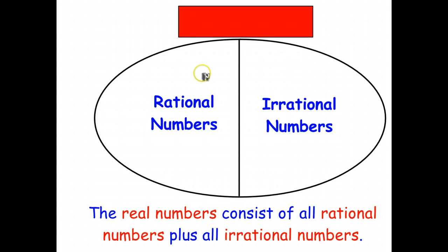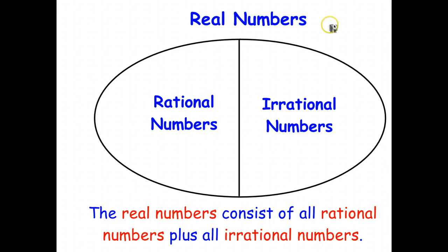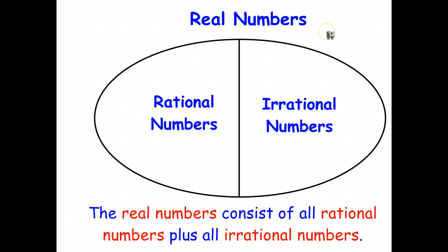Now if you take all of the rational numbers such as one half and three quarters, and all the irrational numbers such as the square root of 2 and pi, you end up with a set of numbers that we call the real numbers. The real numbers are simply all of the rational numbers combined with all of the irrational numbers. For most of you in high school, the only numbers you'll come across are the real numbers.